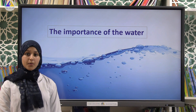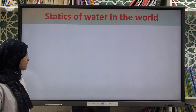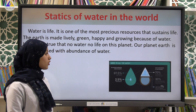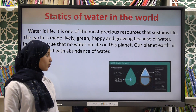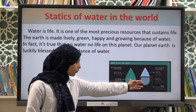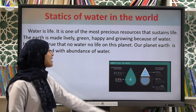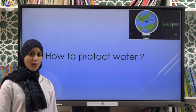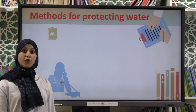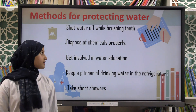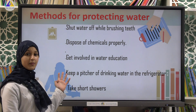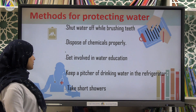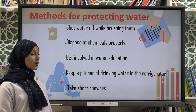Now, the importance of water. Statistics show the percentage of exploiting underground water: 30 percent of water is underground and 70 percent is superficial. Now, how to protect water — there are many methods, for example: shut water off while brushing teeth, dispose of chemicals properly, get involved in water education, keep a pitcher of drinking water in the refrigerator, and take short showers.